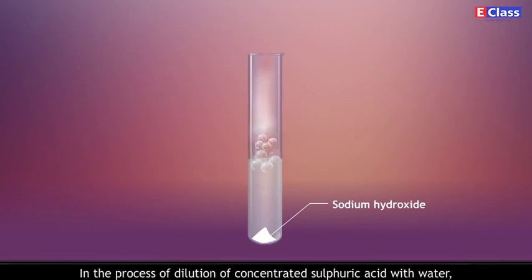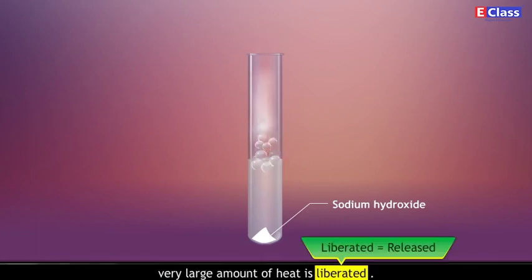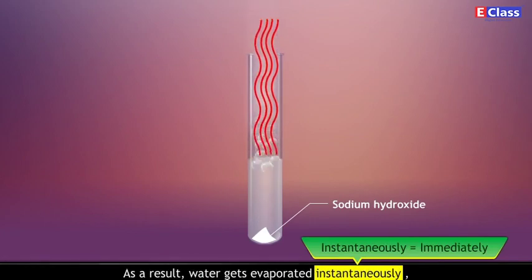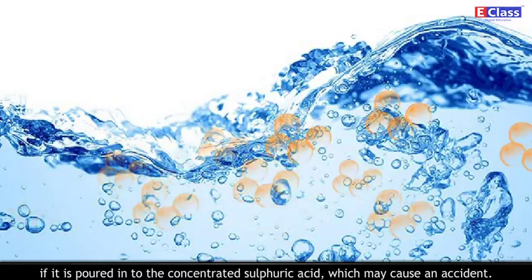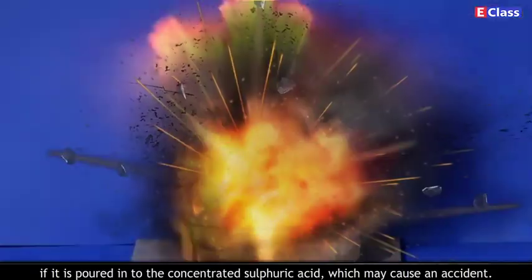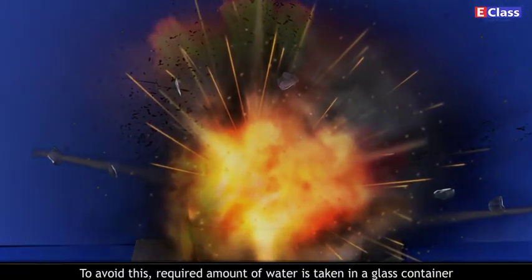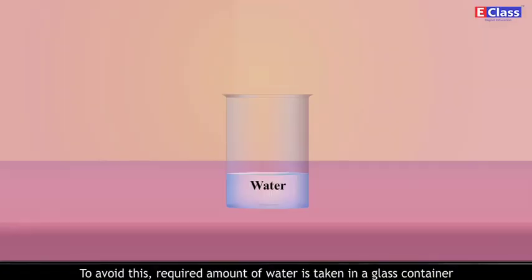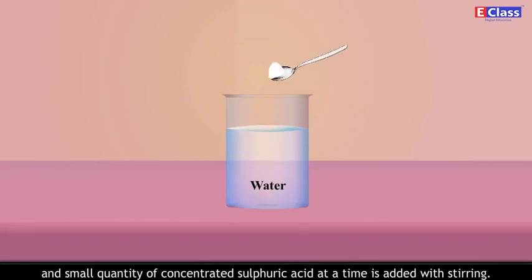In the process of dilution of concentrated sulphuric acid with water, a very large amount of heat is liberated. As a result, water gets evaporated instantaneously if it is poured into the concentrated sulphuric acid, which may cause an accident. To avoid this, the required amount of water is taken in a glass container and a small quantity of concentrated sulphuric acid is added at a time with stirring.